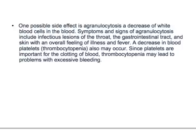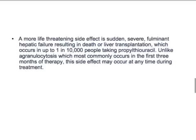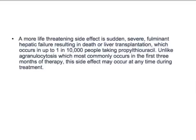Since platelets are important for clotting of blood, thrombocytopenia may lead to problems with excessive bleeding. A more life-threatening side effect is sudden severe fulminant hepatic failure, resulting in death or liver transplantation, which occurs in up to 1 in 10,000 people taking propylthiouracil. Unlike agranulocytosis, which most commonly occurs in the first three months of therapy, this side effect may occur at any time during treatment.